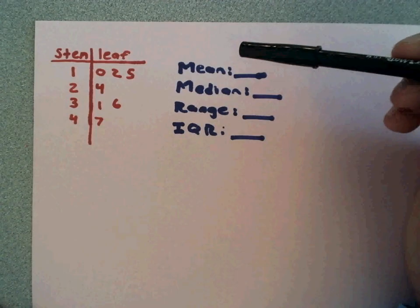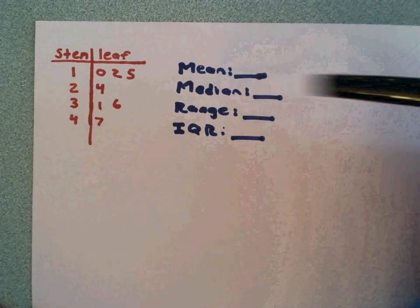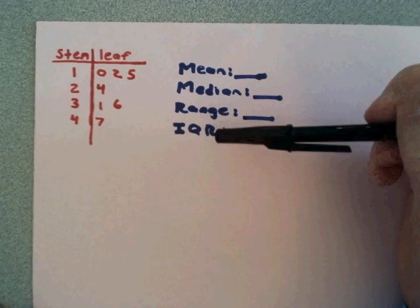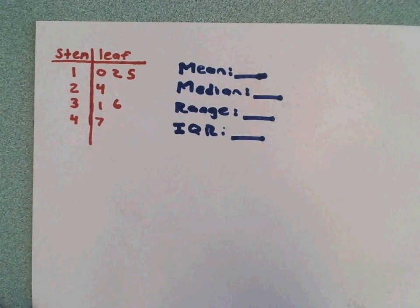Hi there, let's take a look at finding our measures of center, mean and median, and our measures of spread, range and interquartile range, using a stem and leaf plot.